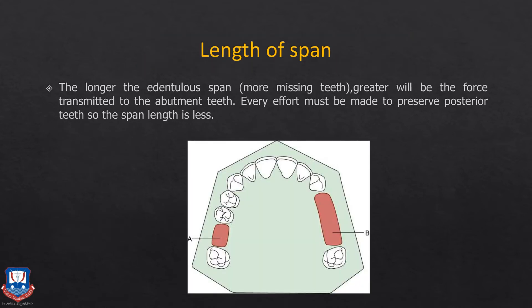Regarding the length of the edentulous span: the longer the span — meaning more missing teeth — the more critical it becomes to ensure RPD stability during function. Occlusal forces should be transmitted vertically along the long axis of the teeth, and direct retainers must be placed at the terminal ends of long edentulous spans. If a terminal abutment such as a third or second molar with a questionable prognosis can be saved, every effort should be made to do so to reduce the edentulous span length.